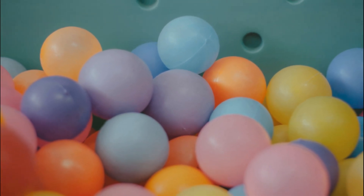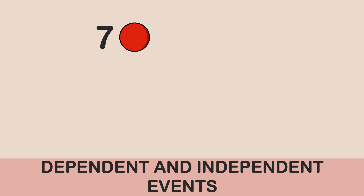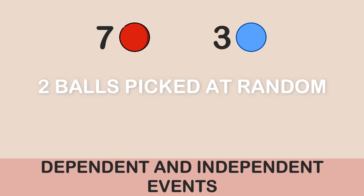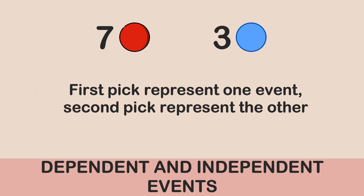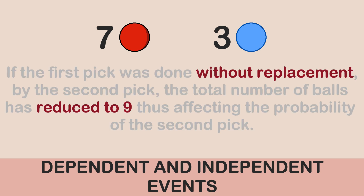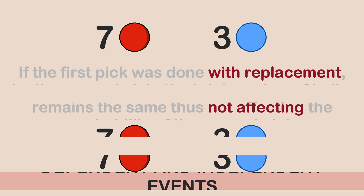Consider a bag containing seven red balls and three blue balls. If I pick two balls at random and do not replace the first ball, the total number of balls reduces from ten to nine. The probability of picking the second ball is therefore affected by the first pick. When we perform experiments without replacement, the first event affects the second, giving us what we call a dependent event.